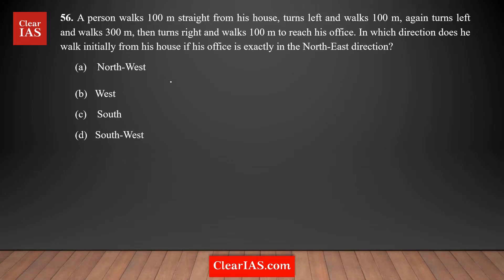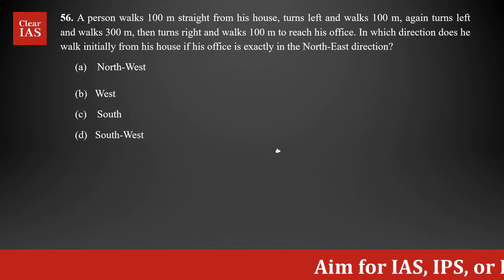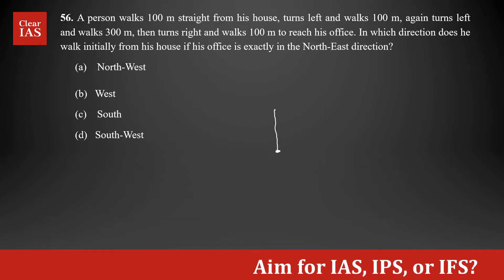This is a direction-based question. A person walks 100 meters straight from his house. I'm assuming this is the house, and he's facing towards north — his house is facing towards north. So he walked 100 meters straight, so this is 100 meters.